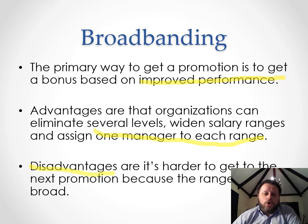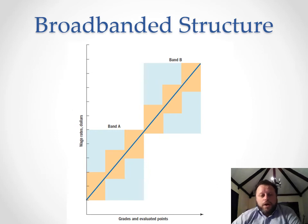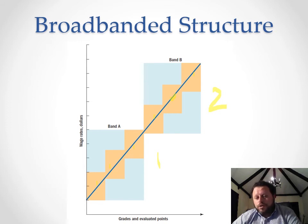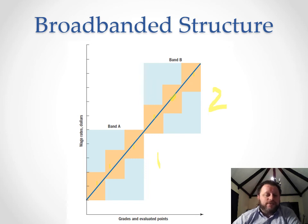The disadvantage of broadbanding is it's harder to get to the next promotion. Where before you had six different grades, with broadbanding you might have only two. All the people who were in grades four, five, and six can move around within that one broad band without being overly concerned about what specific grade they hold. Promotions and raises are based on improved performance rather than narrow grade advancement.